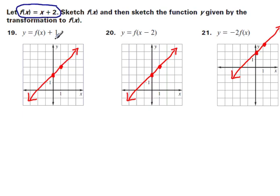Now to sketch the transformation, I need to take that original function and shift it up one unit. So instead of my y-intercept being here at 2, it's going to shift the whole line up 1 and I end up with a parallel line, same slope, but different y-intercept.